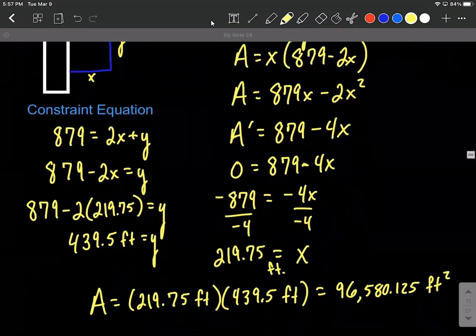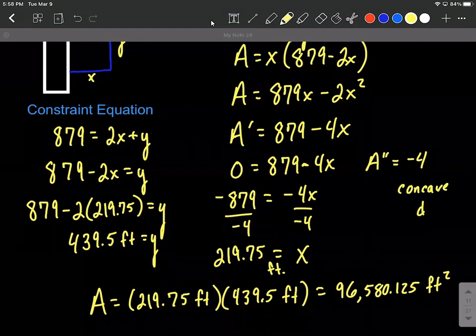The additional thing we could do is use either the first derivative test or second derivative test to ensure this actually is going to be a maximum. The second derivative here is negative four, which tells us this is concave down, so that's going to be a maximum area. Hope this helps out. Good luck. These are actually really fun problems after you get the hang of how they work out. Till next time.